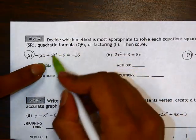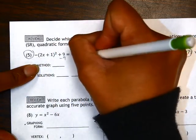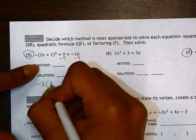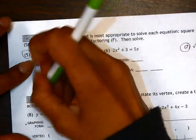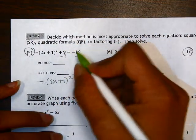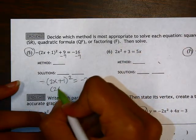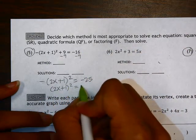So I'm going to first subtract 9 from both sides. That gives me negative parentheses 2x plus 1 squared and then this becomes a negative 25. Dividing both sides by negative 1, we get 2x plus 1 squared equals 25.